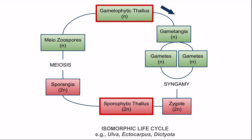In the isomorphic type of life cycle, two types of plant body or thallus are present. One is gametophytic thallus that is haploid, and another one is sporophytic thallus which is diploid. These thalli alternate with each other — gametophytic thallus forms the sporophytic thallus and sporophytic thallus forms the gametophytic thallus. Since both of these are morphologically similar, this type of alternation of generation is known as isomorphic alternation of generation.